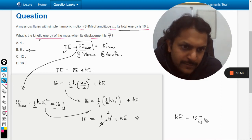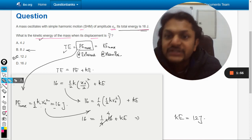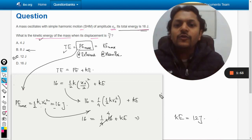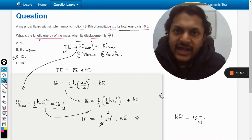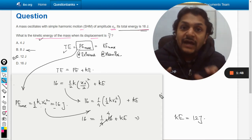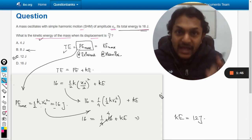Yes, so the answer should be C. So this is how we do it. As per the total energy is concerned in SHM, it is always the sum of instantaneous kinetic energy and the instantaneous potential energy.